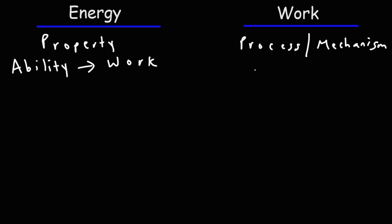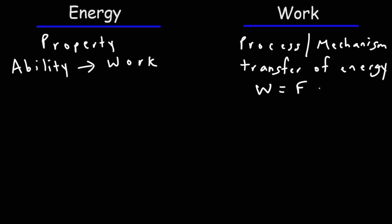Work involves a transfer of energy. Work is not energy itself, but work is done whenever energy is transferred from one object to another. That energy is transferred by the action of forces on an object as it moves through a displacement. So work is equal to force times displacement — it's really the dot product of those two vectors.